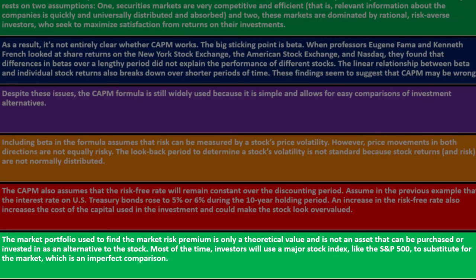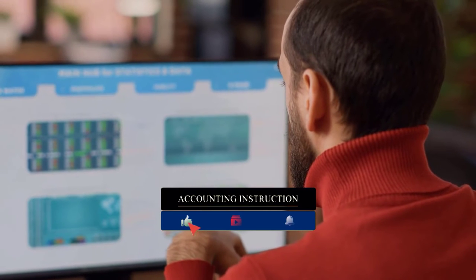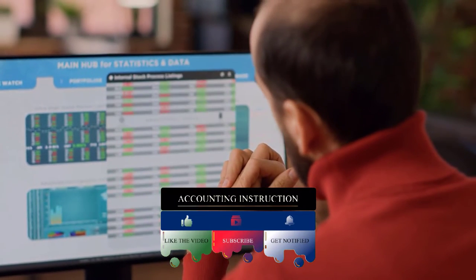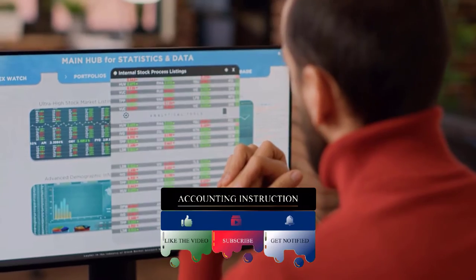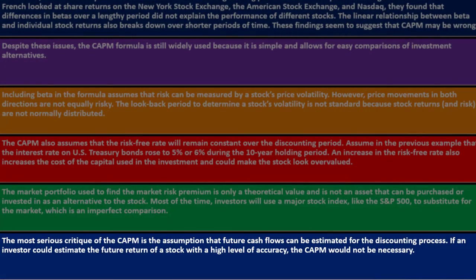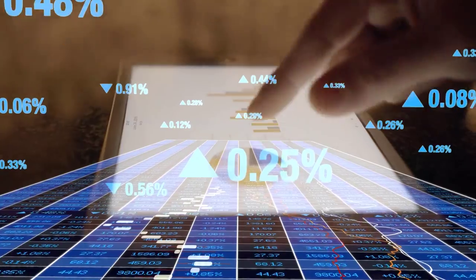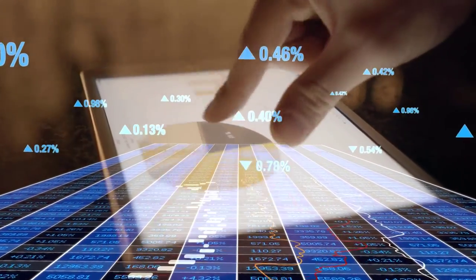The market portfolio used to find the market risk premium is only a theoretical value and is not an asset that can be purchased or invested in. Most of the time, investors use a major stock index like the S&P 500 to substitute for the market — an imperfect comparison since it's an index, essentially an average trying to sample the whole market. The most serious critique of the CAPM is the assumption that future cash flows can be estimated by the discounting process. With bonds, we can straightforwardly discount an annuity of interest payments plus a lump sum at maturity.